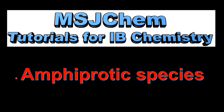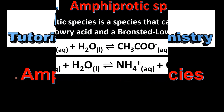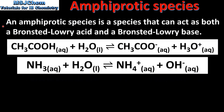This is MSJChem. In this video I'll be looking at amphiprotic species. So let's start with a definition. An amphiprotic species is a species that can act as both a Bronsted-Lowry acid and a Bronsted-Lowry base.